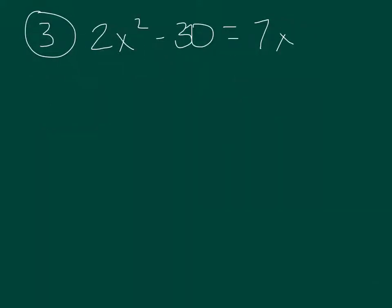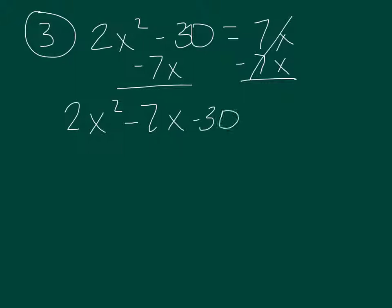Number 3, it's not equal to 0 yet. So to make it equal to 0, we would need to subtract 7x from both sides. Remember, we're going to keep it in order of the ax to the second plus bx plus c. So we'd have 2x to the second minus 7x minus 30. Now it equals 0. So it has to be equal to 0 before you start. And then you factor, just like normal.